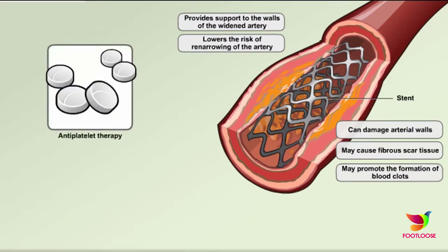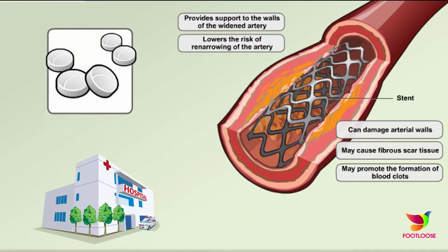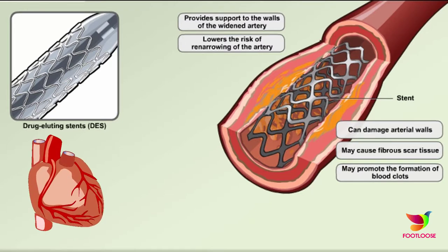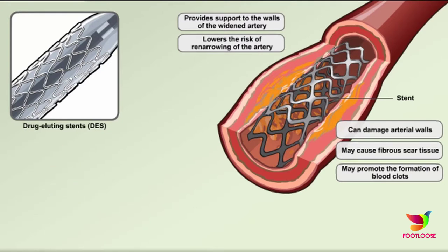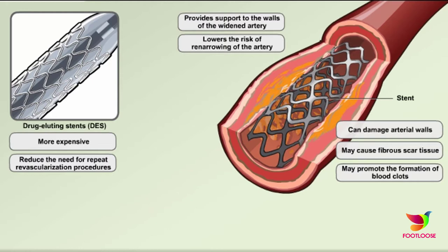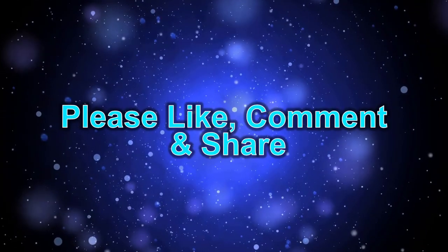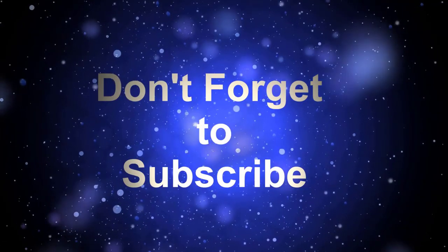What happens after heart angioplasty and stent placement? Your surgeon will probably want you to stay in the hospital overnight to ensure there are no complications such as bleeding, blood clots, or problems with blood flow to the heart. Your stay might be even longer if you had a coronary event such as a heart attack. When you return home, drink plenty of fluids and restrict physical activity for some time. It's important to follow your doctor's instructions.